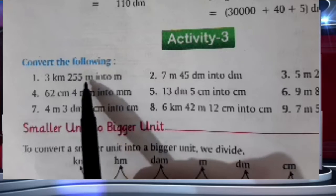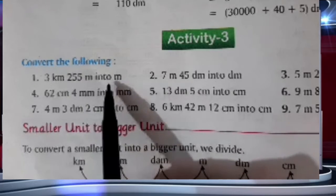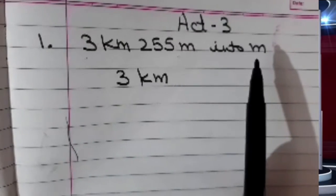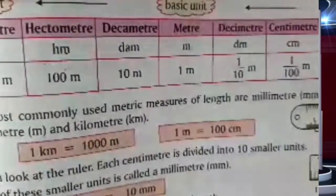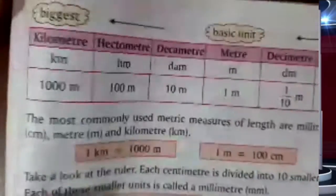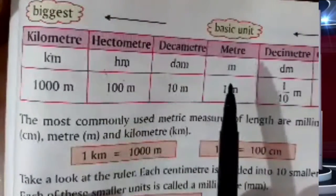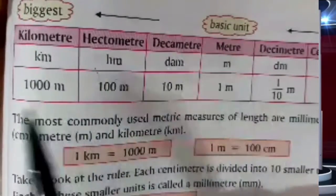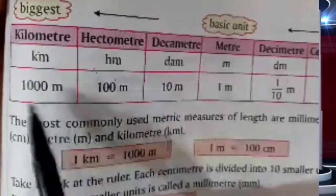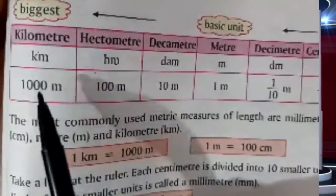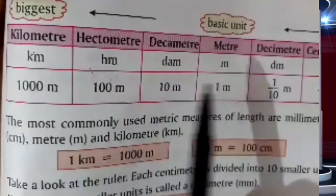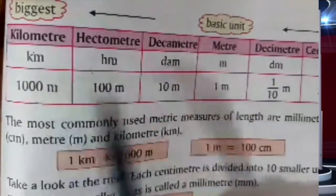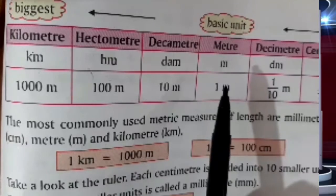Convert 3 kilometer 255 meter into meter. So first of all I will convert 3 kilometer into meter. Now this is my chart. Here this is kilometer and this is meter. Kilometer to meter — I have to travel in this direction, that is from left to right.